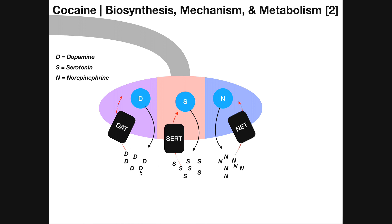Once those neurotransmitters are in the synapse, they diffuse across and bind to receptors. However, you also have to have a way to get rid of them. There are enzymes that can degrade these neurotransmitters, but one way to control their levels in the synapse is via reuptake — when a protein in the plasma membrane of the axon moves neurotransmitters back up into the axon. The transporter for dopamine is called DAT or dopamine transporter; for serotonin it's SERT; and NET is the reuptake transporter for norepinephrine. This allows for a limited and controlled level of these neurotransmitters in the synapse.